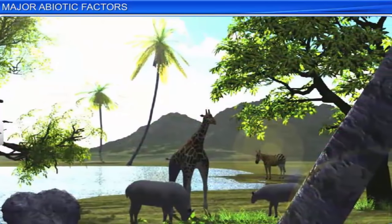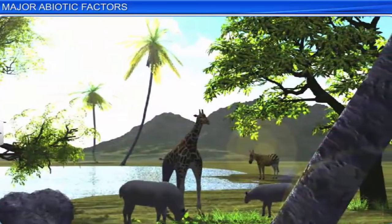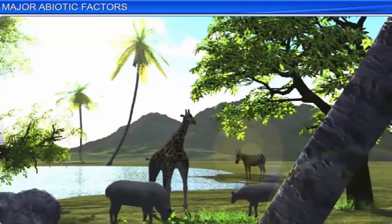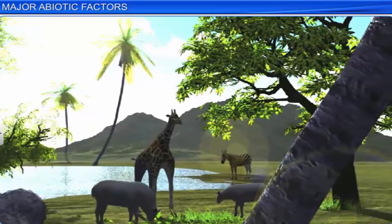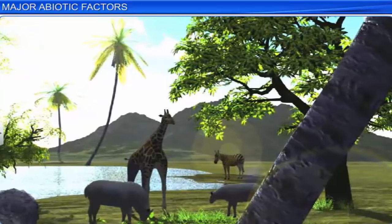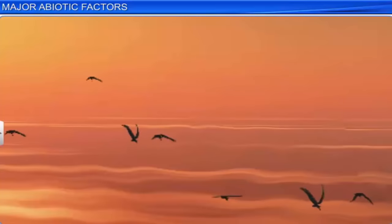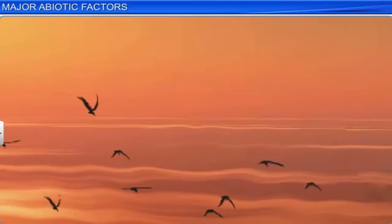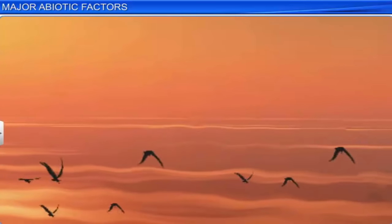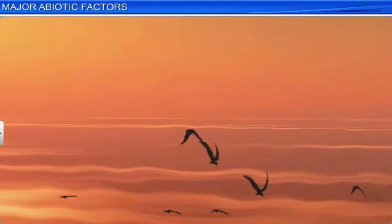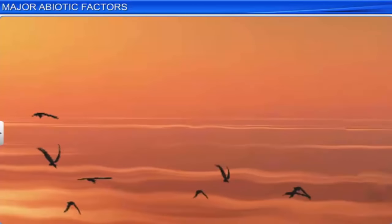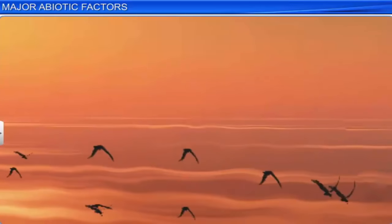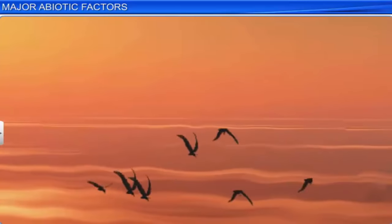Similarly, for many animals, sunlight is important for their existence. The diurnal and seasonal variations in light intensity and photoperiod signal them that it is time for their foraging, reproductive, and migratory activities.